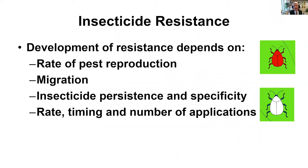Resistance doesn't happen every time you use an insecticide — it happens with some pests more often than others. A lot of it has to do with the rate of reproduction. Things like aphids and mites that have several generations per year are more likely to develop resistance than white grubs that only have one generation per year or every three years. Migration also matters — Japanese beetles migrate into your vineyard from outside, so you're always diluting the gene pool with immigration. The rate, timing, and number of applications you make will also influence resistance, making it a fairly complicated process.